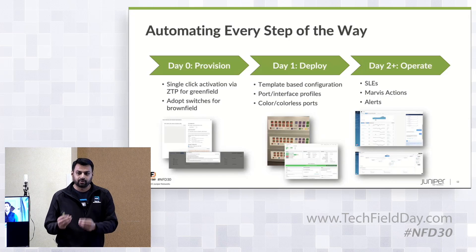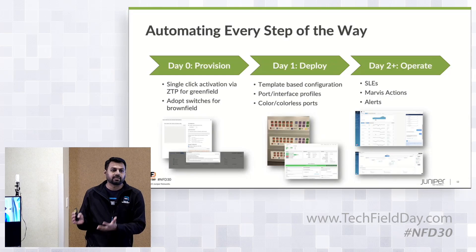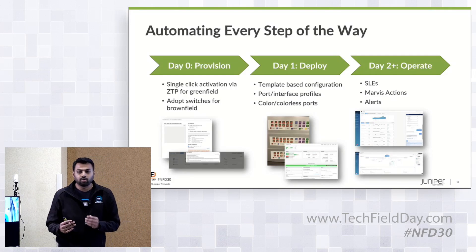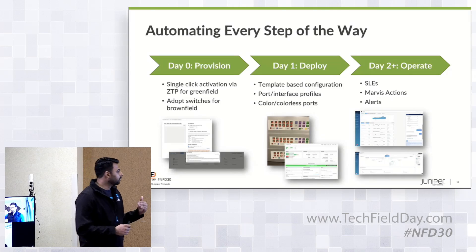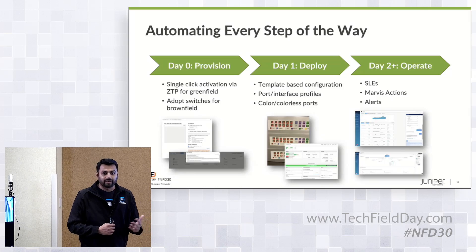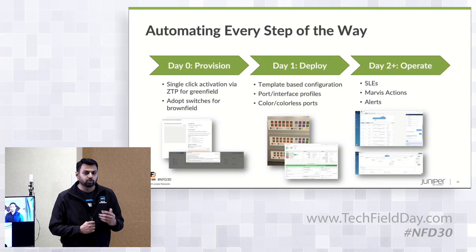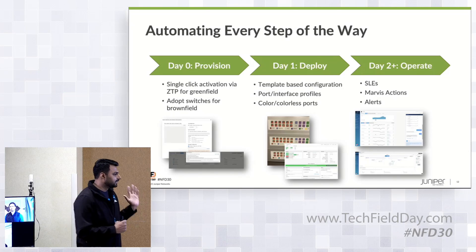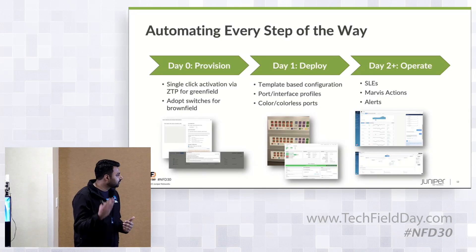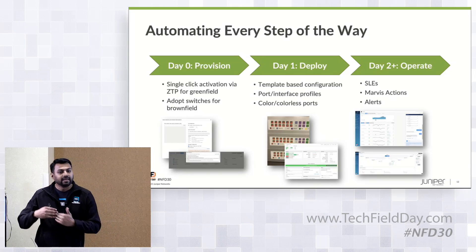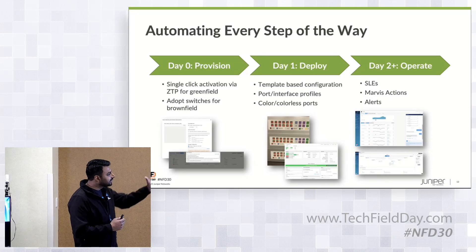Every single switch that goes out is shipped with a claim code. You can actually either onboard all of your devices that are part of a particular purchase order in one shot, or you could do them via a mobile app as you go installing them, racking them, and stacking them. The goal for us is to make deployment as console-cable-free as possible. You take a snapshot from your mobile app, claim the device — which you would have already configured at scale — and the device automatically connects to the cloud, gets its config, and starts serving its clients, be it APs or subsequent switches. That's the day zero part of it.